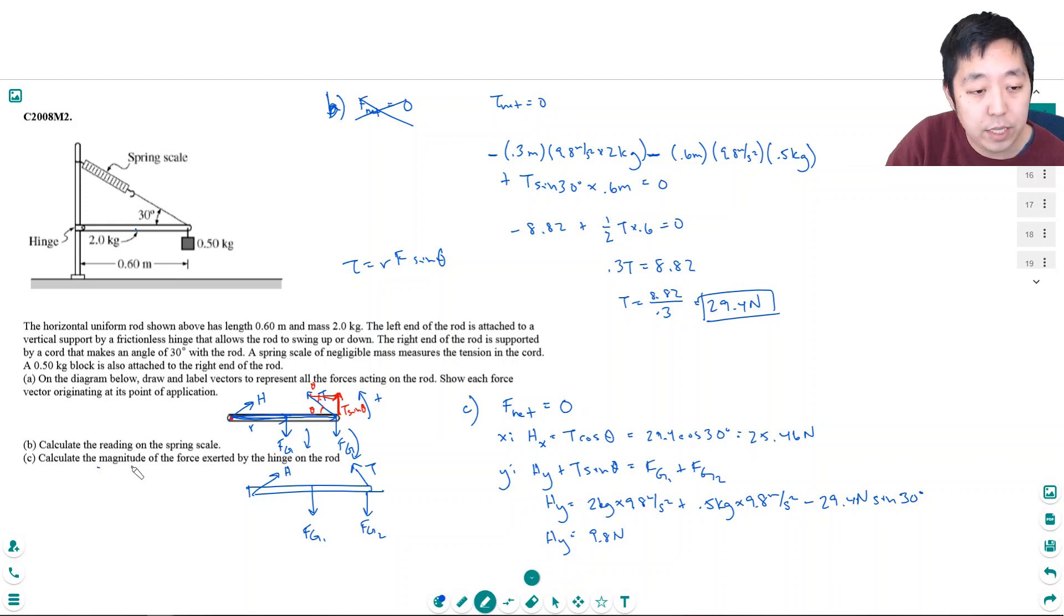Okay. But what they're asking is the magnitude of the force exerted by the hinge on the rod. I have the hinge force in the x direction. If you think about it this way, I know it's 25.46. And I know the vertical component is 9.8. To find the magnitude of the total component, I could do Pythagorean theorem. So h is equal to the square root of hx squared plus hy squared. I just square each of these, add them up and take the square root. So square root of 9.8 squared plus 25.46 squared. I get h is 27.28 newtons.